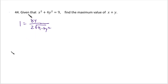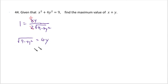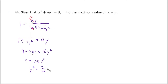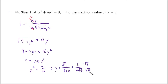Simplifying by dividing top and bottom by 2 gives 4y / (2√(9 − 4y²)) = 1, so √(9 − 4y²) = 4y. Squaring both sides: 9 − 4y² = 16y², so 9 = 20y². Dividing by 20 gives y² = 9/20, and taking the square root gives y = 3/√20 = 3/(2√5). Rationalizing the denominator gives y = 3√5/10.